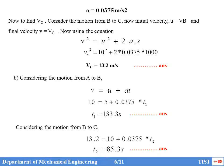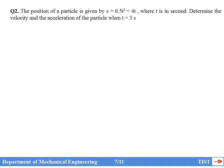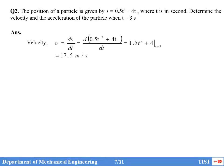We will now go to another question where acceleration is not uniform. Question 2: The position of a particle is given by S = 0.5t³ + 4t, where t is in seconds. Find the velocity and acceleration when t = 3 seconds. This is a simple question. Velocity is v = dS/dt. Since S is a function of time, simply differentiate: v = 1.5t² + 4. Substituting t = 3 gives v = 17.5 m/s.